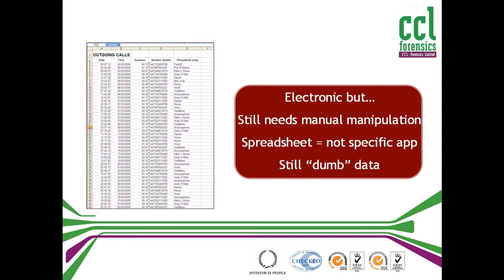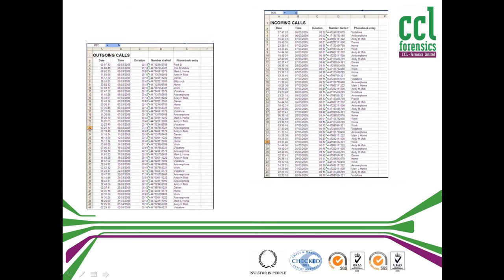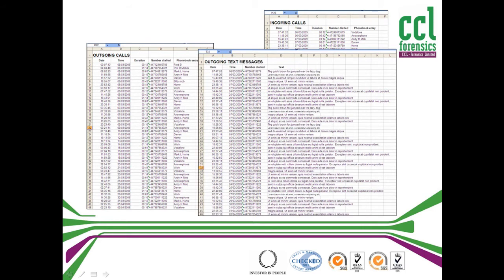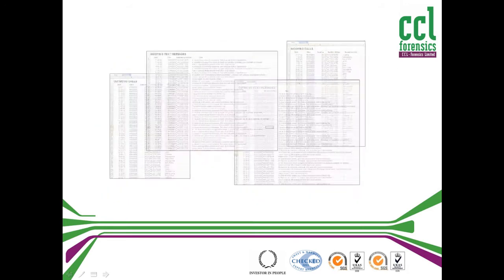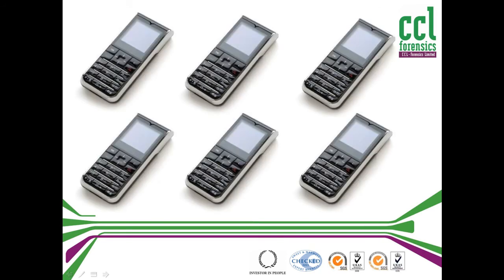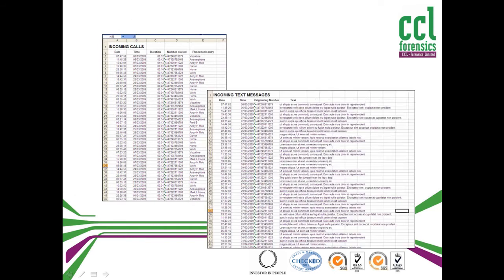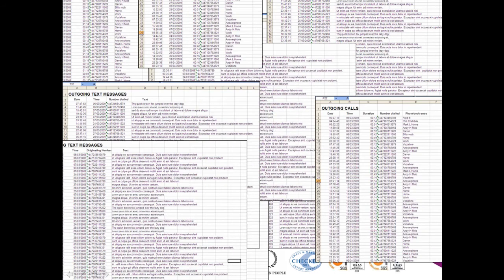Added to this, the many types of data a phone can handle, and things can easily become unwieldy very quickly. This is made worse by cases involving more than one exhibit. Quickly, investigators can drown under large amounts of data, all of different types, formats and from different exhibits.